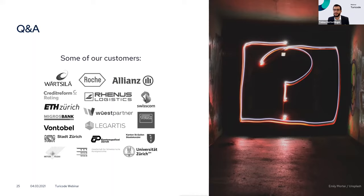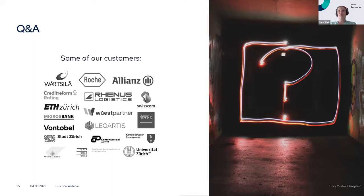How does the licensing model look? We are a classical Software-as-a-Service company. There is an implementation fee to set up your system to your liking, and then the pricing model is volume-based. Our clients usually know roughly how many documents or pages they process per week, month, or year, and we set up a price for that amount.